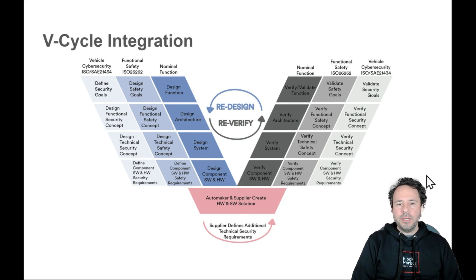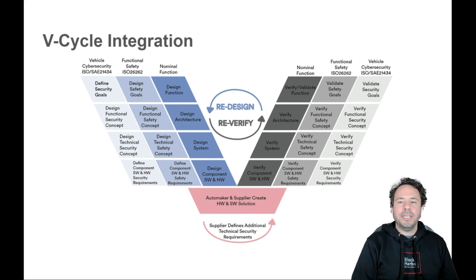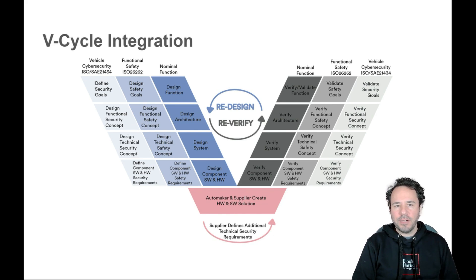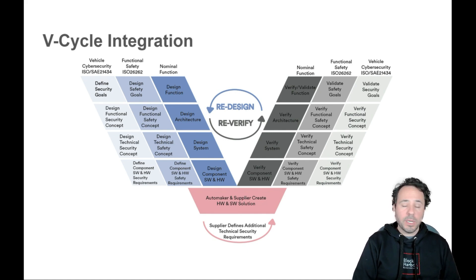If you've been in automotive engineering a while, you should be familiar with the V-model system development lifecycle. It's important to see where safety and cybersecurity parallel each other in the development process, so we've included it here. Clause 7 doesn't necessarily pertain to any one of these areas, but can pertain to any part that you have outsourced.